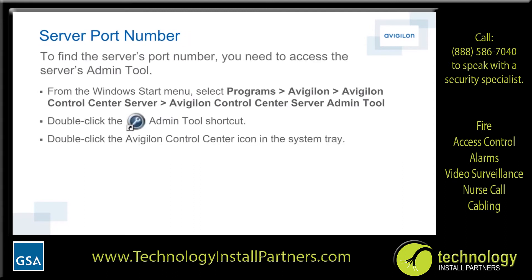To access the admin tool from the server, perform one of the following. From the Windows Start menu, select Programs, Avigilon, Avigilon Control Center Server, Avigilon Control Center Server Admin Tool. Alternatively, double-click the admin tool shortcut on the desktop, or double-click the Avigilon Control Center icon on the system tray.